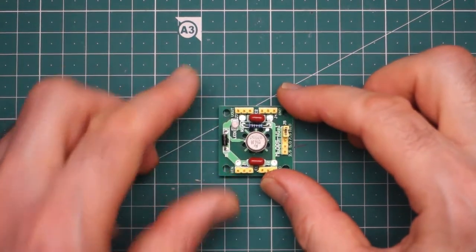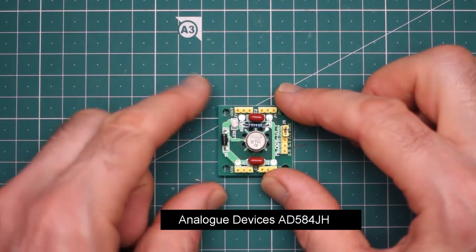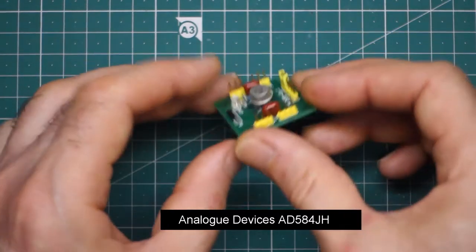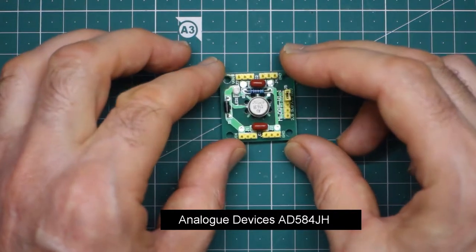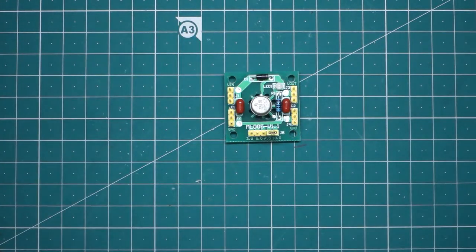It's a circular package here in the middle. It's actually on quite sort of tall pins. And this device has the ability to create a very stable and accurate voltage.